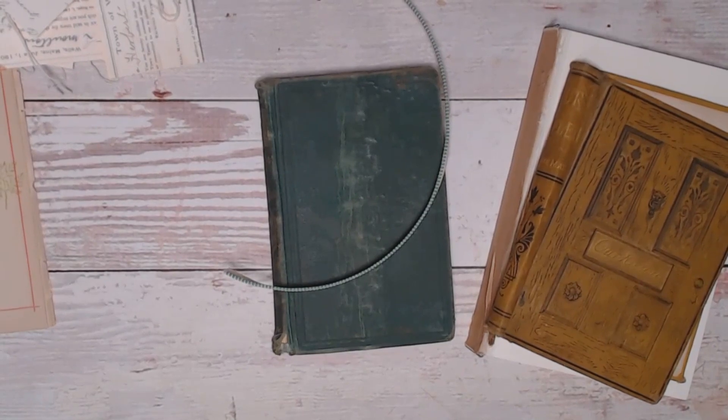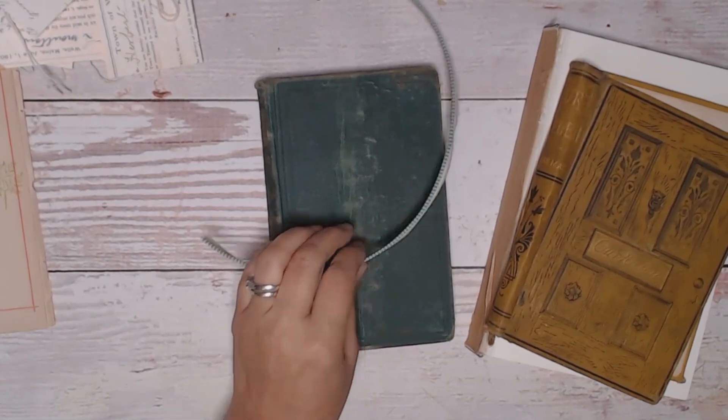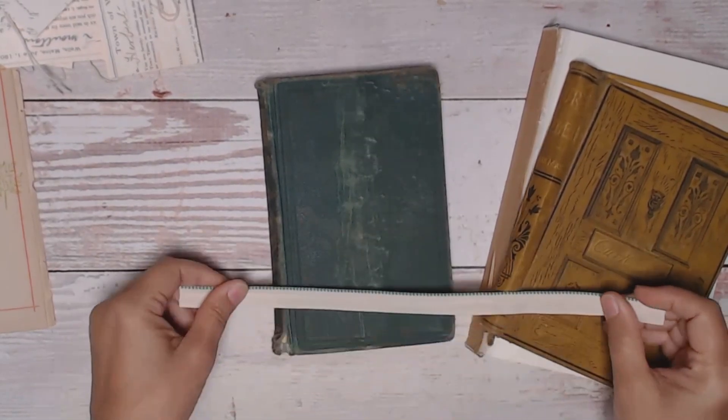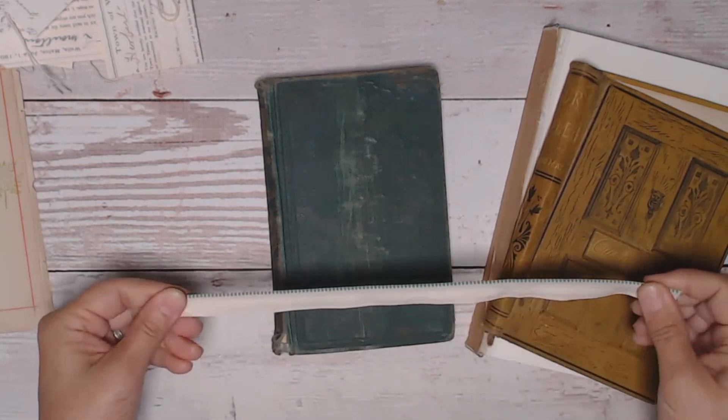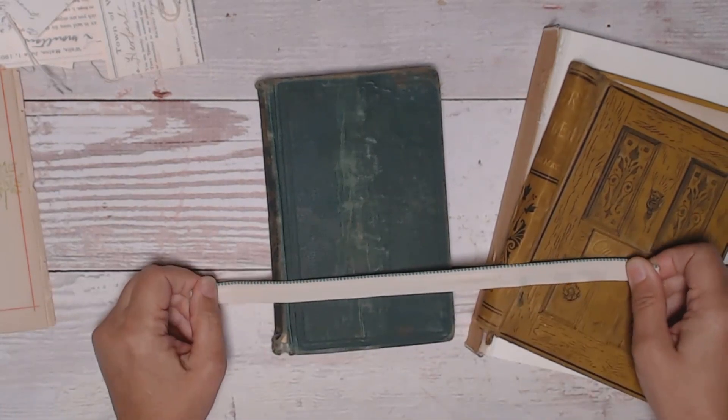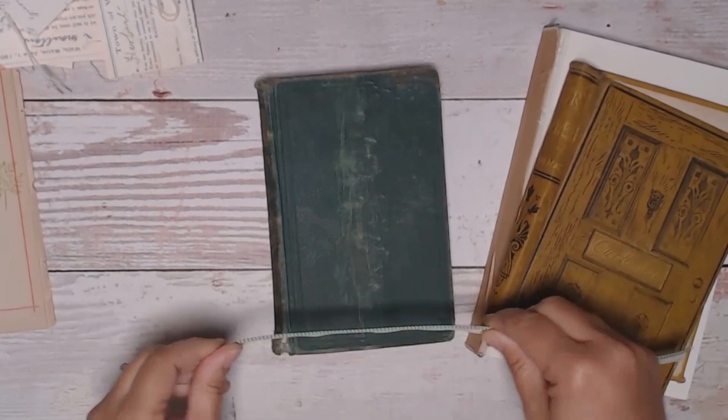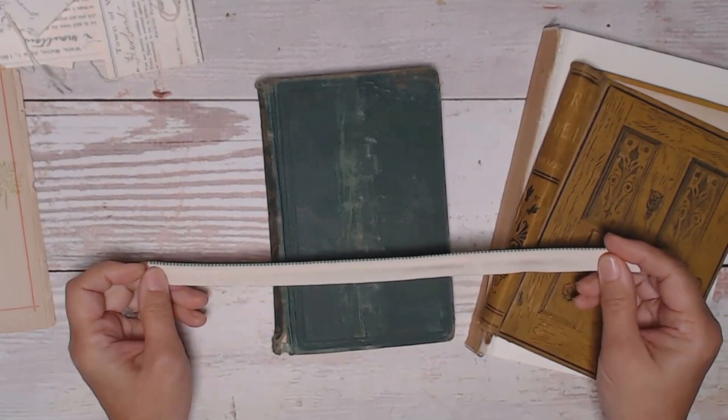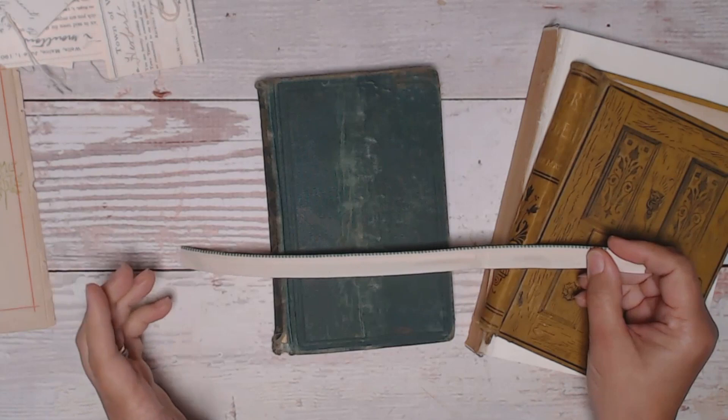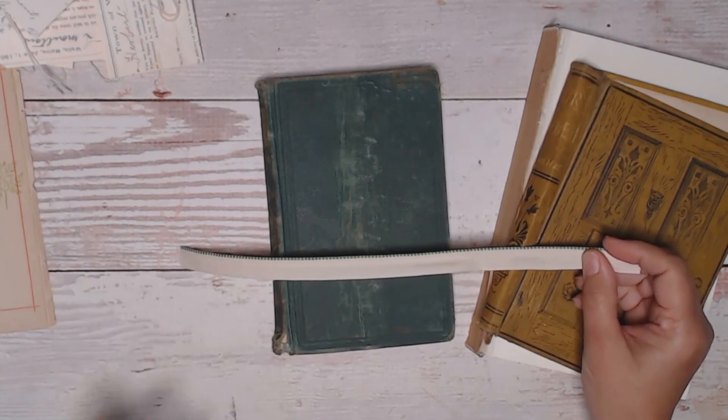So today I'm talking about headbands. It's really interesting to delve into the history of headbands and look at what they used to look like and how they've developed over the years. I encourage you to go ahead and do that on your own. I'm not going to give a whole history of it right now, but just to tell you that headbands are the decorative element that are found at the head and sometimes tail of a text block on a bound book.